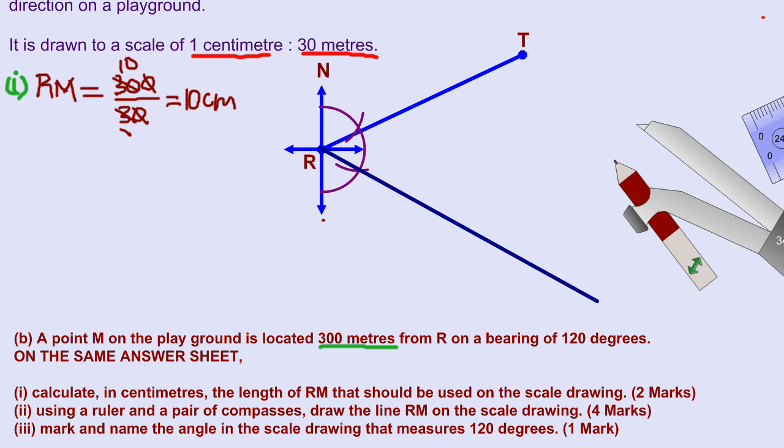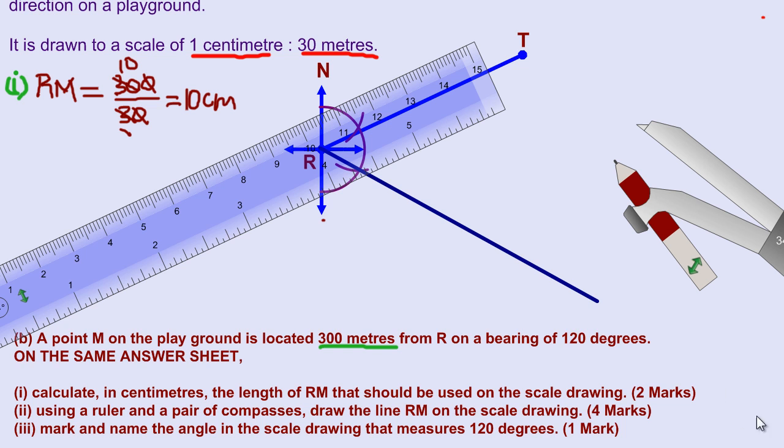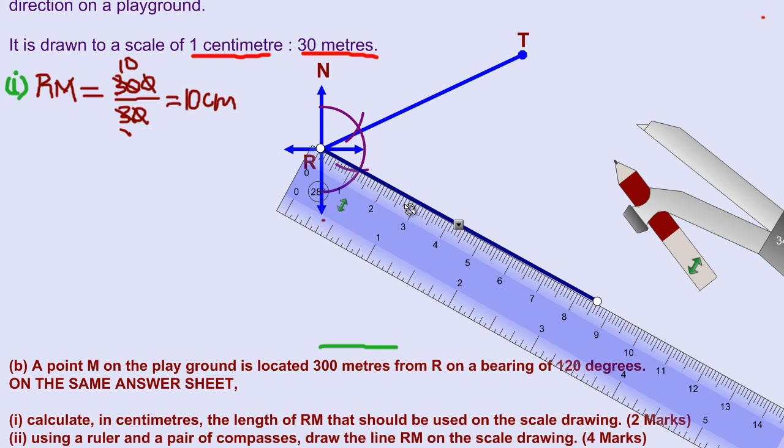I'm just simply going to take my ruler and I'm going to measure off 10 centimeters. If you notice, I'm placing my zero on the point R and I'm just going to simply extend this line to 10 centimeters. That's pretty much it.